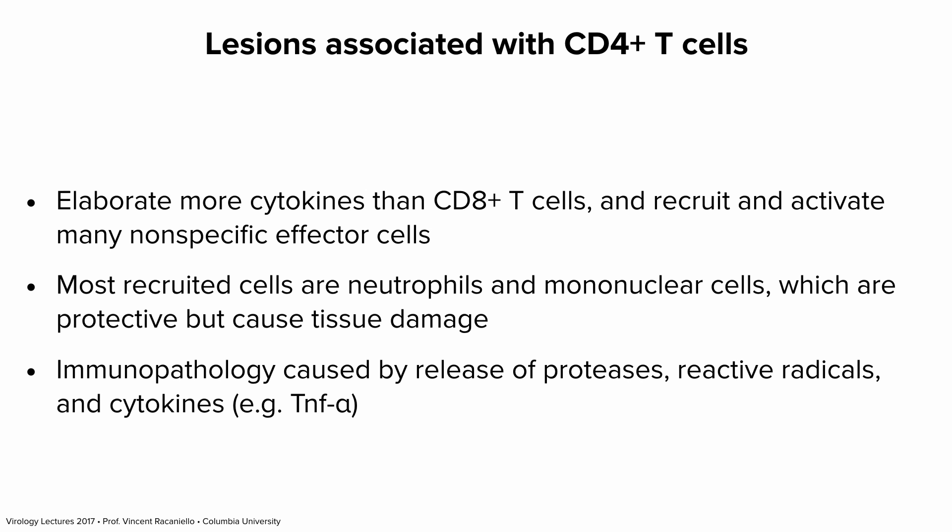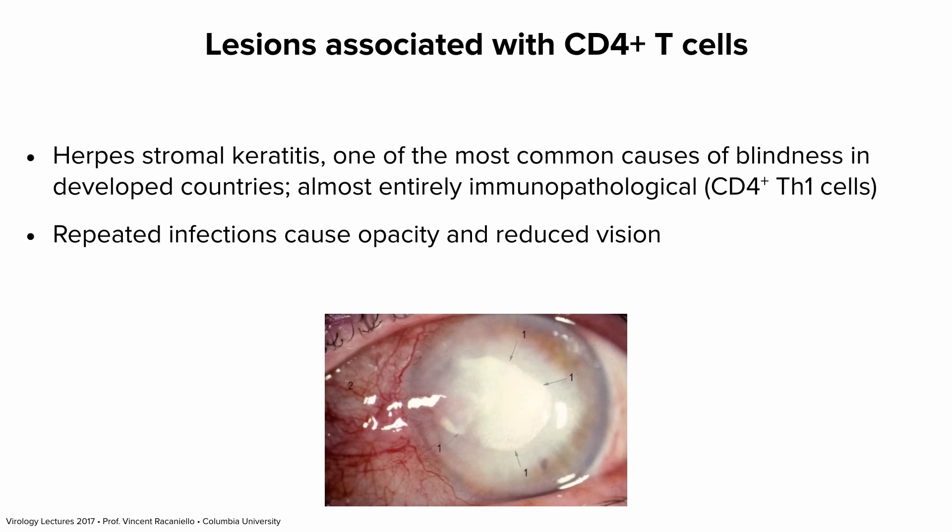We have lesions associated with CD4+ T cells. These cells make cytokines that help antibody production or generation of CD8 CTLs — Th1 or Th2. They make a lot of cytokines, recruit neutrophils and mononuclear cells, and these recruited cells release proteases, reactive radicals, and cytokines — all causing immunopathology in the tissues.